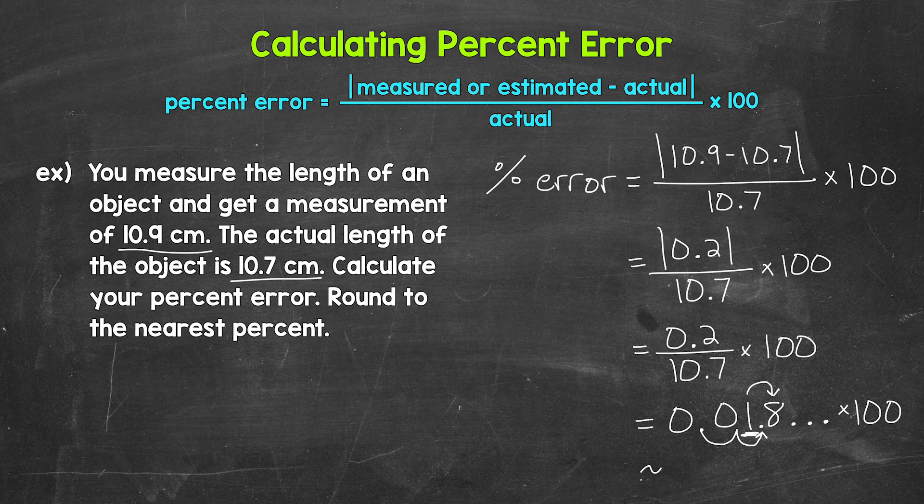Our percent error here is approximately two percent. And I'm using the approximately symbol there since we rounded. That means that the measurement of 10.9 centimeters was off the actual length of 10.7 centimeters by about two percent.